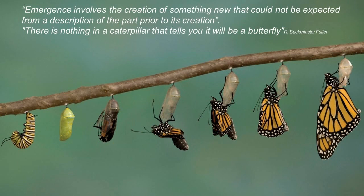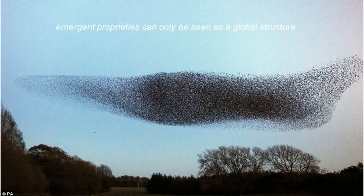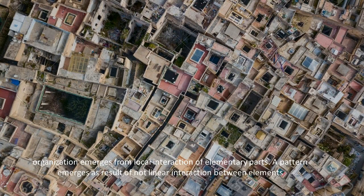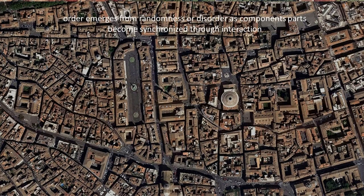There is nothing in a caterpillar that tells you it will be a butterfly. In IMM, the emergence process of interaction between elementary parts to form a synergy is named Key Categories. They are the product of the synergy between elementary parts — a new organization that emerges not as an additive result of the properties of elementary parts. Emergent properties can only be seen as a global structure. In IMM, organization emerges from local interaction of elementary parts. A pattern emerges as the result of non-linear interaction between elements, and order emerges from randomness or disorder as component parts become synchronized through interaction.